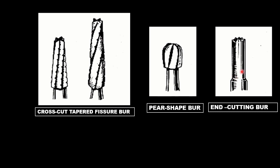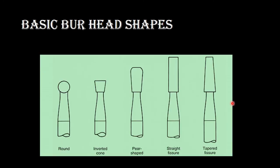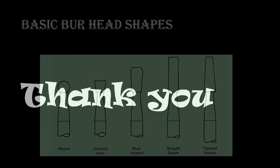And here we have the end cutting burs. In the diagram here we can see these are cylindrical in shape with just the end carrying the blade, so they are very efficient in extending the preparation apically without any axial reduction. So this is all about these burs. Now coming to the basic bur head shapes, we have the round bur, inverted cone, pear shape, straight fissure, and tapered fissure bur. This is all about dental burs.